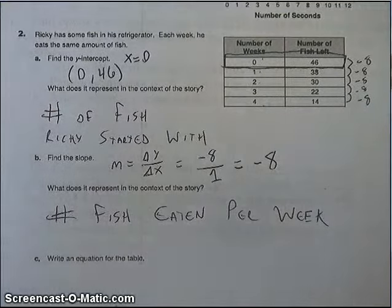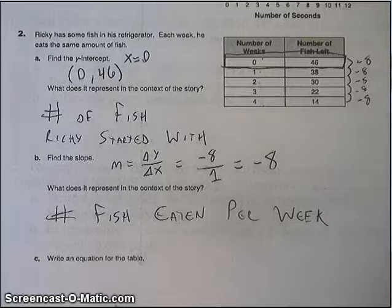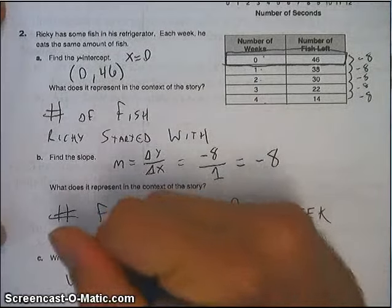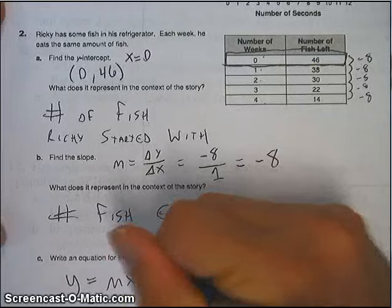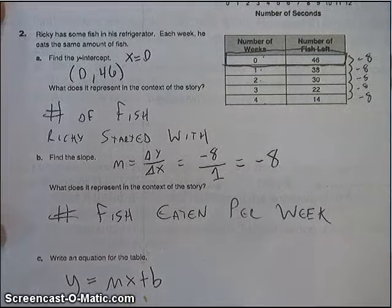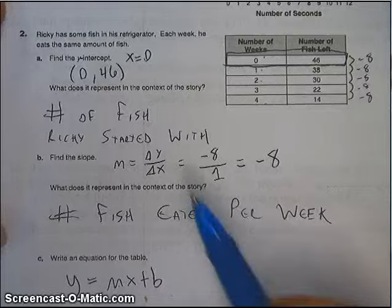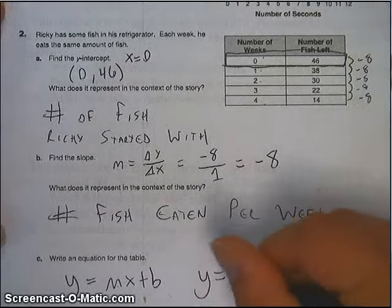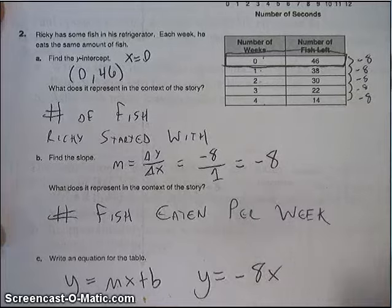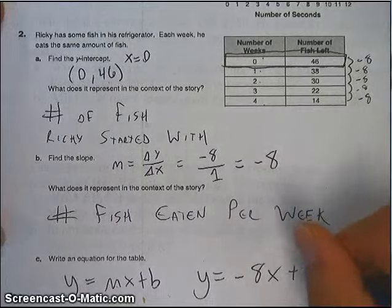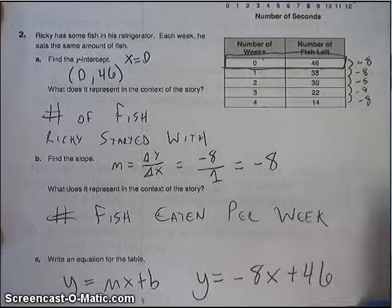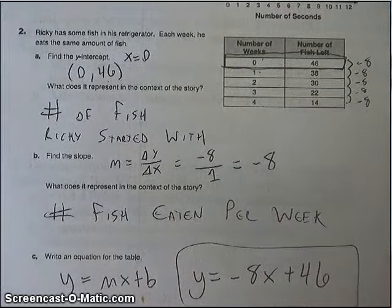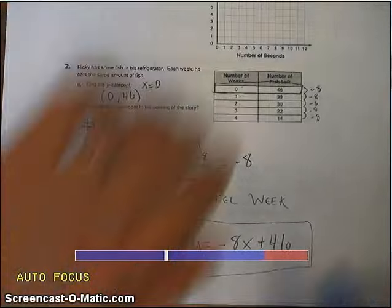Well, if we have a slope, and we have a y-intercept, we sure can write an equation. Remember, to write an equation that's linear, we usually use the form y equals mx plus b. And in this case, we have a slope, m, and a b, a y-intercept. So we can write the equation, y equals our slope, which is negative 8x plus 46. All right, so that's how to write an equation from a table.